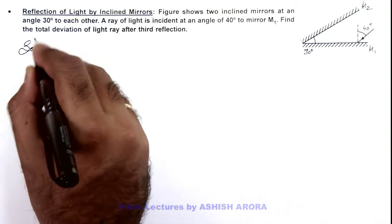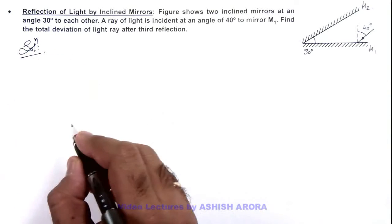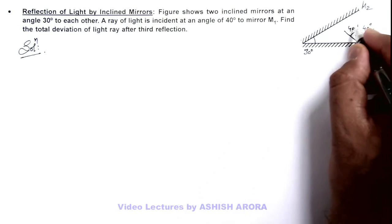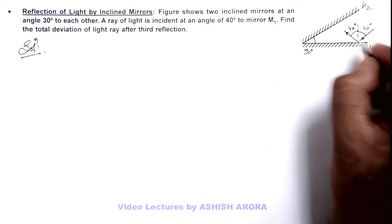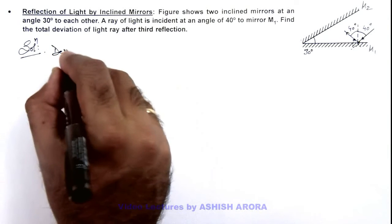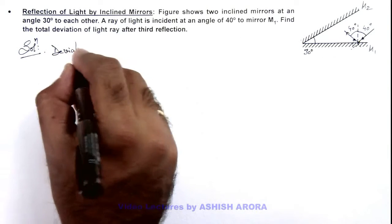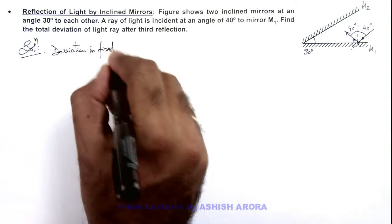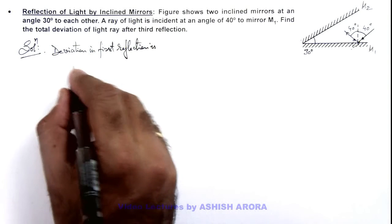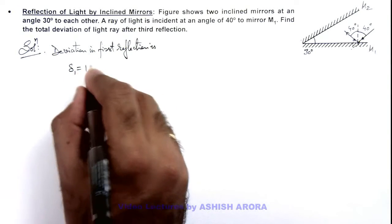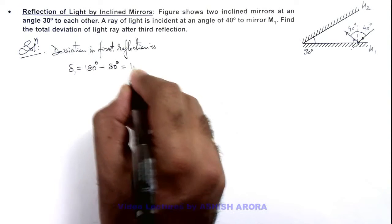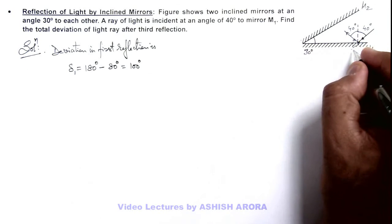We can use the laws of reflection to find the result. When this light ray is incident, it is reflected at the same angle of 40 degrees. So for the first reflection, the deviation delta 1 can be written as 180 degrees minus twice the incidence angle, that is 180 minus 80, giving 100 degrees deviation. This is delta 1.